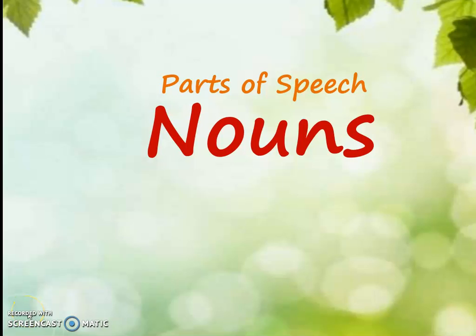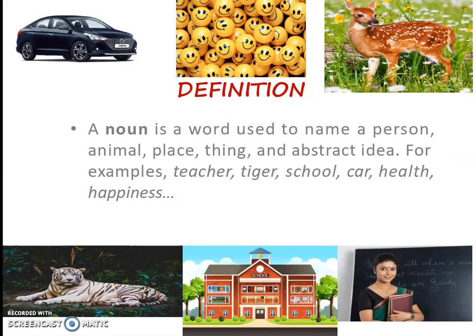Hi, today we are going to see about noun. You know what is noun? A noun is a word used to name a person, animal, place, thing, and abstract idea. For example, teacher, tire, school, car, health, happiness.